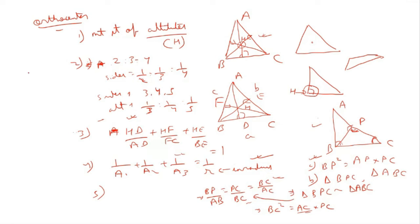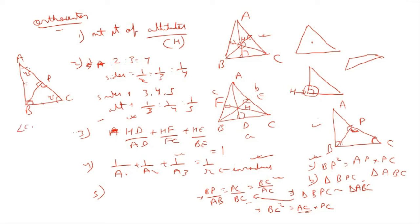For an isosceles right triangle where the right angle is 90° and the two base angles are each 45°, when you draw the altitude from the right angle vertex to the hypotenuse, the same similarity principles apply. Angle C is common between the small and large triangle, and one angle in the small triangle is 90°, matching the 90° in the larger triangle, so they are similar by AA.